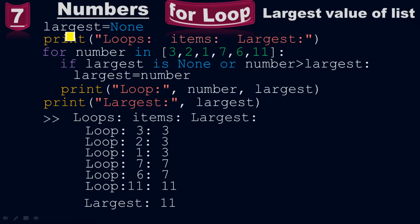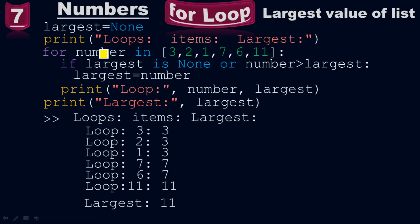Initially largest is set to none — the largest value is not known. Then print 'loop: items: largest:' inside double quotes. Then we use the for loop: for number in [3, 2, 1, 7, 6, 11]. This is the list of numbers. I gave the name 'number' here — these individual numbers are represented by the variable name 'number'. Then put a colon and press enter — your new line will start from here.